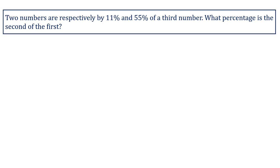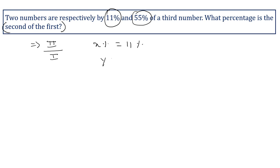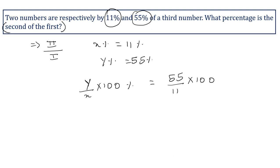Two numbers are respectively 11 percent and 55 percent of a third number. What percentage is the second of the first? Second is compared with the first, so put the value of second in the numerator and first in the denominator. x percent equals 11 percent and y percent equals 55 percent. Using the formula y upon x into 100 percent: 55 upon 11 into 100 percent gives 500 percent. So 500 percent is the second of the first.